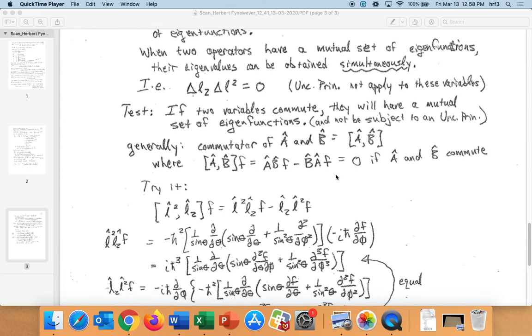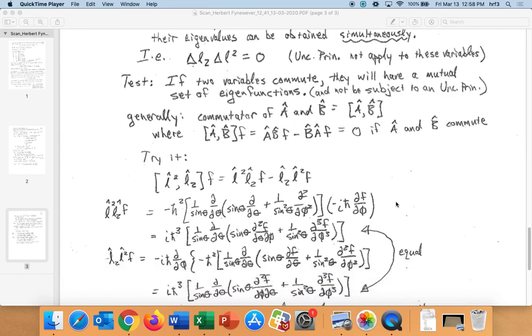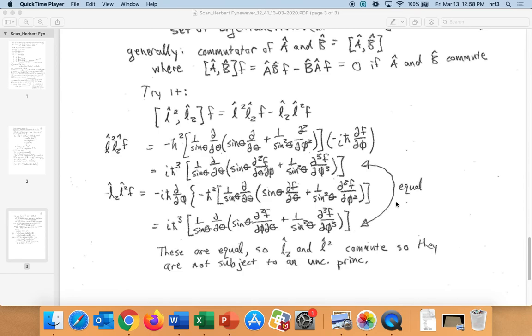So you use the operators working from right to left. So b would operate on f first, and then a would operate on the result. And here a would operate on f first, and then b would operate on the result. Now, if these are both eigenfunction eigenvalue equations, then it's no wonder that these are going to cancel because you just keep getting the function back again.